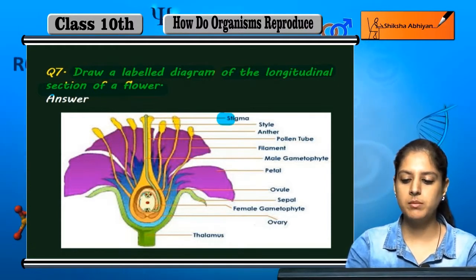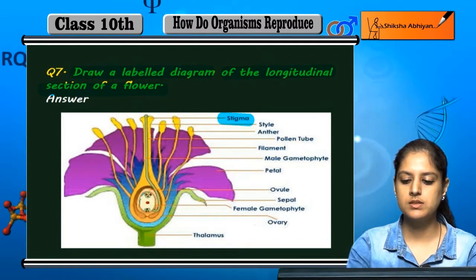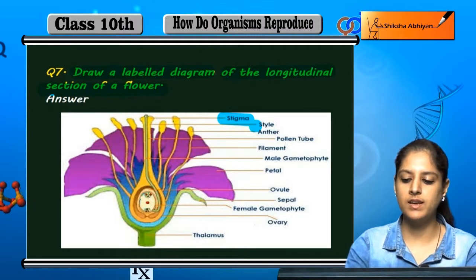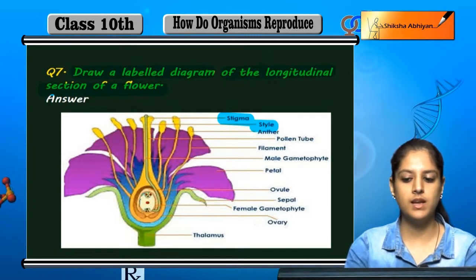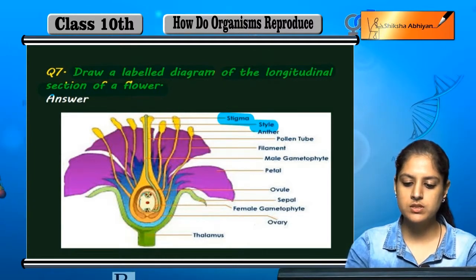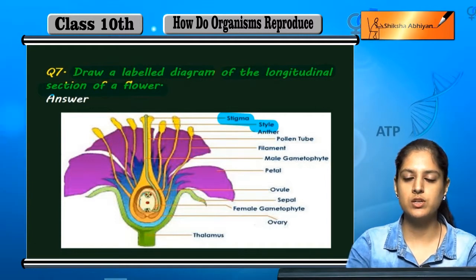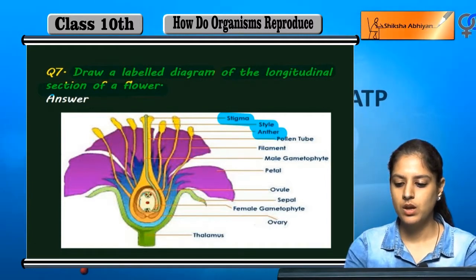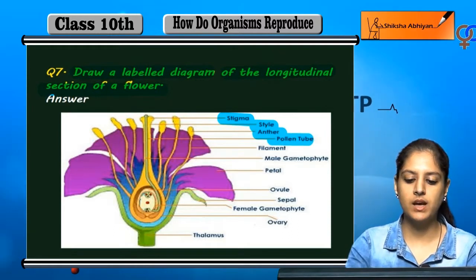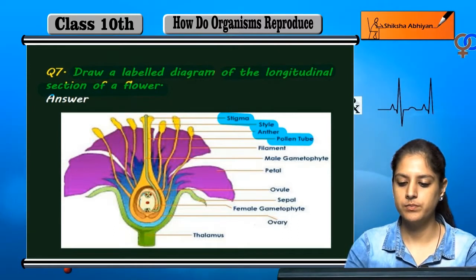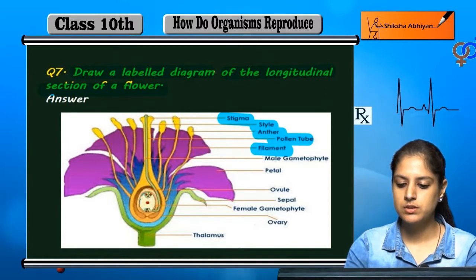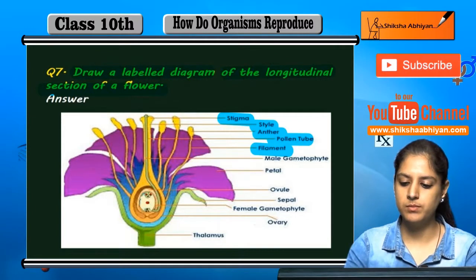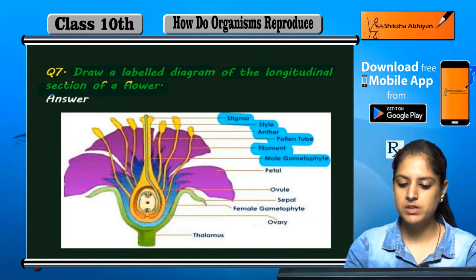Starting from the top of the diagram: the stigma is at the top, and its outer lining is the style. On the side you can see some elongations — these are the anther. The pollen tube is inside the style. You can also see the filament; the anther is connected to it from below. This represents the male gametophyte.